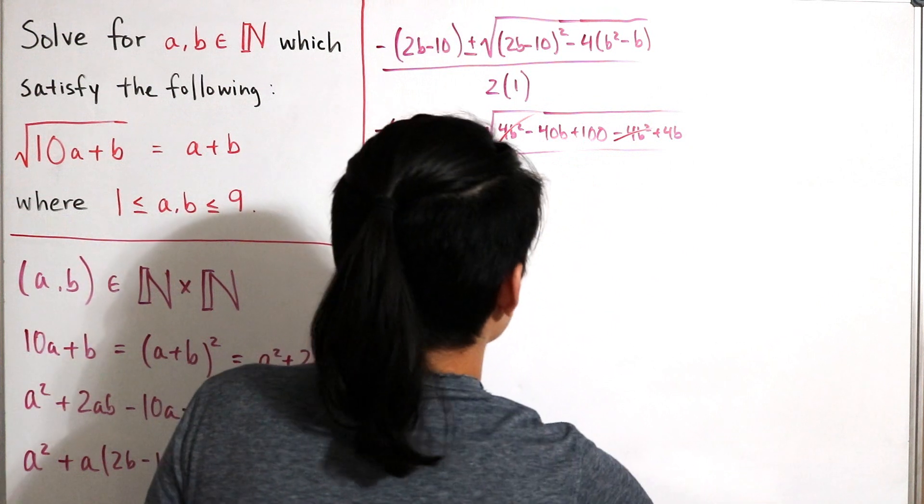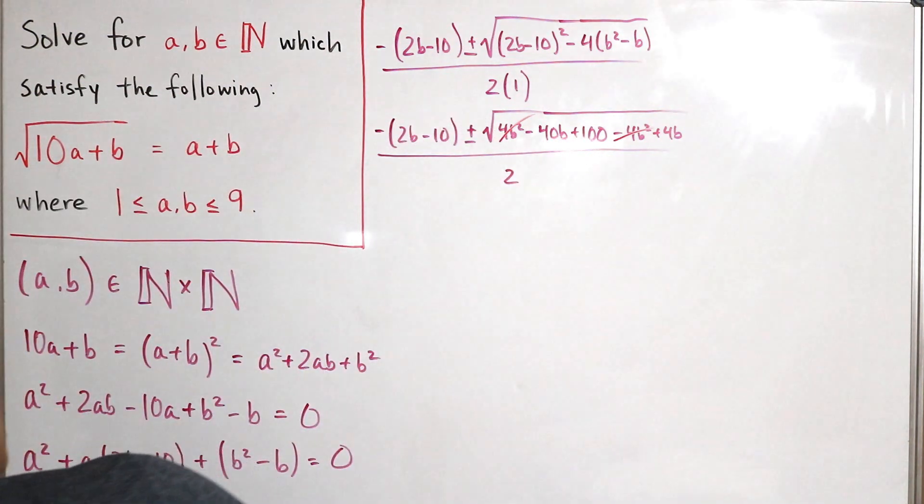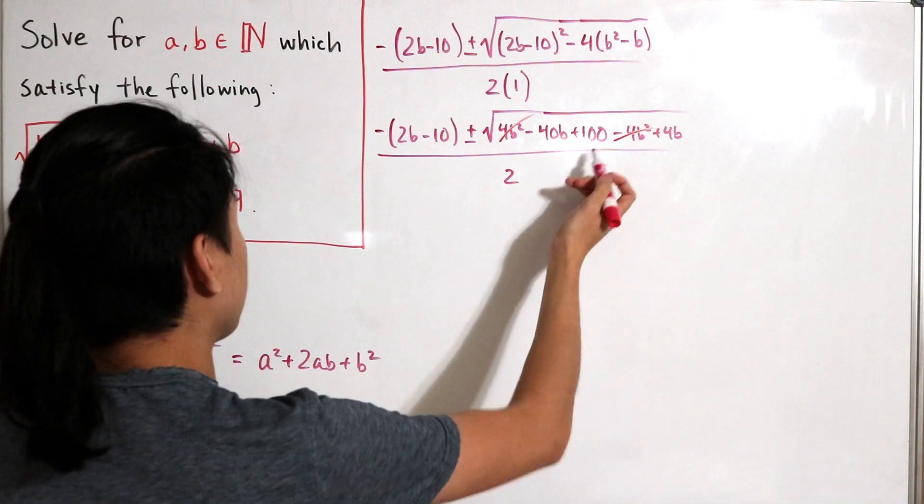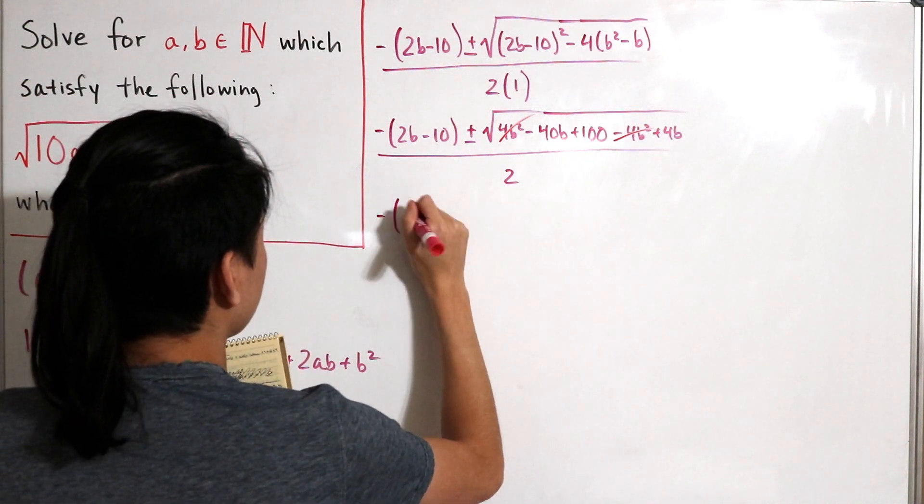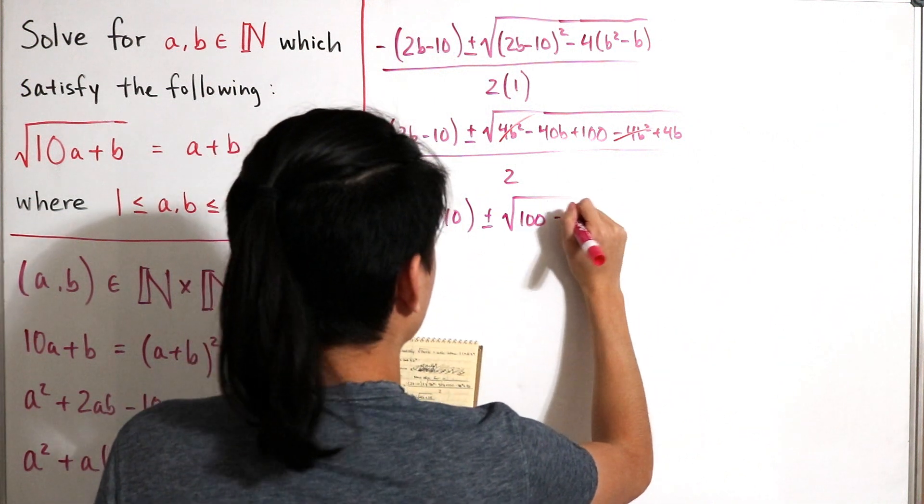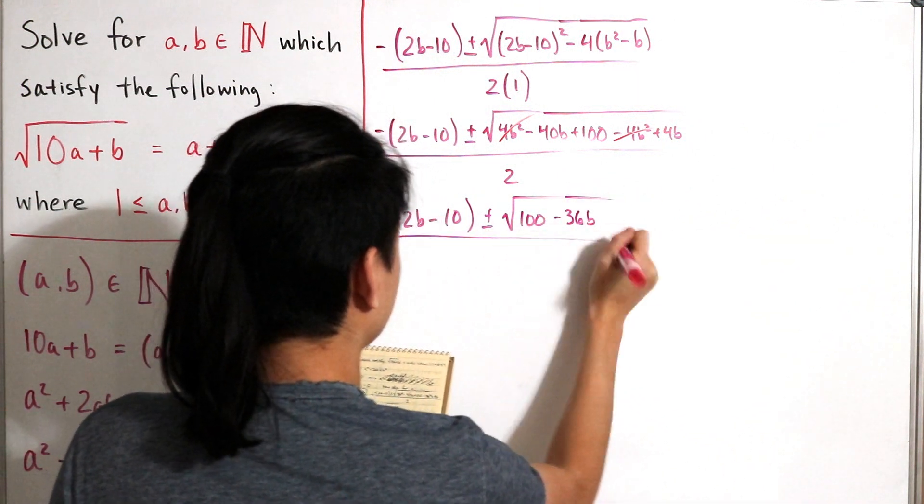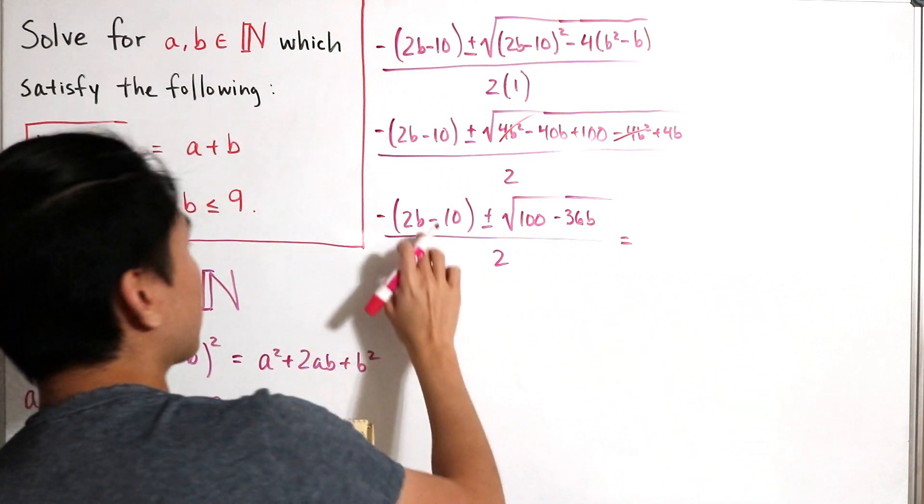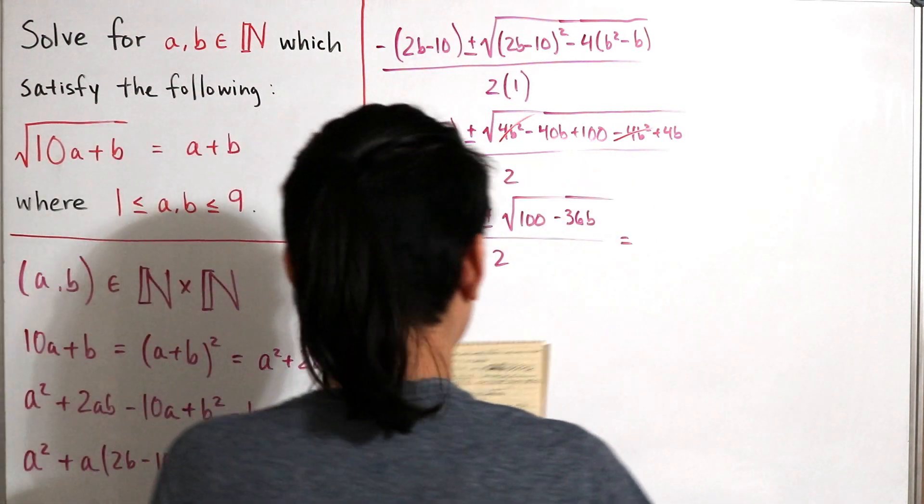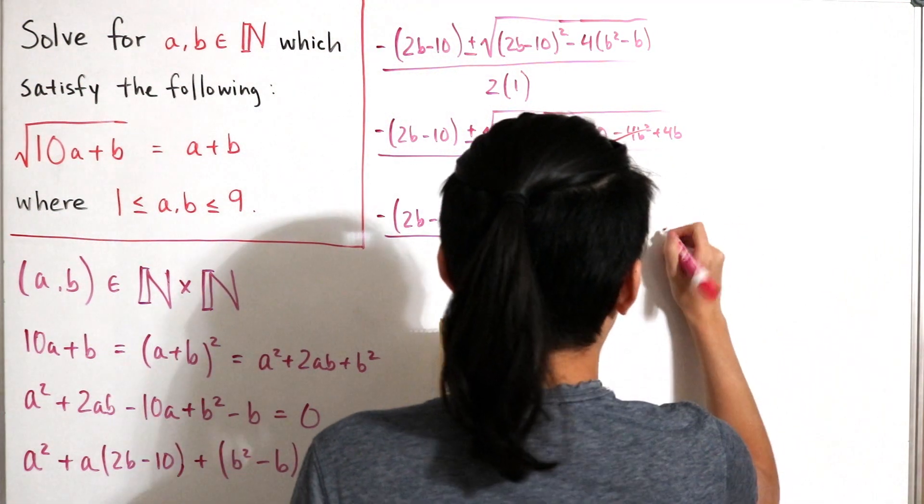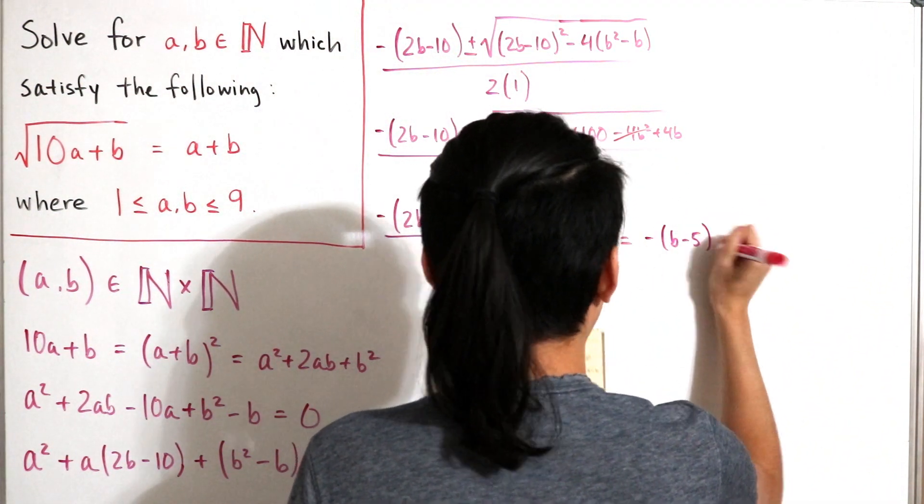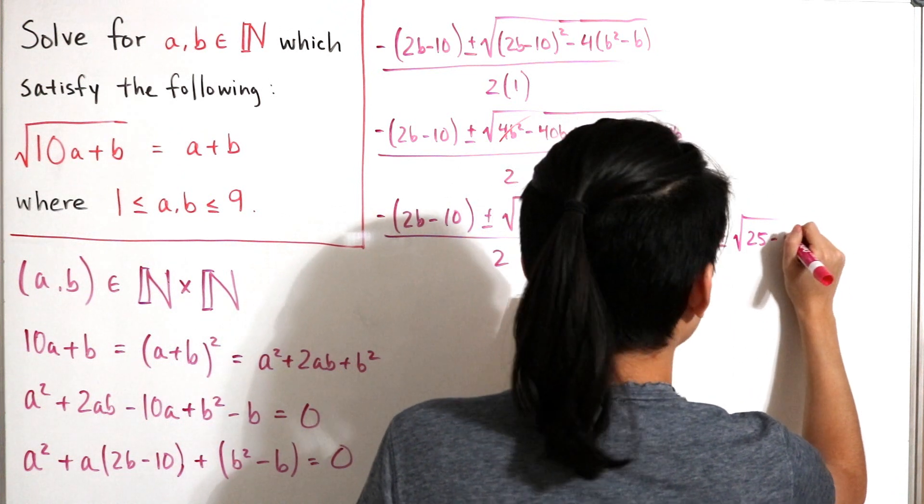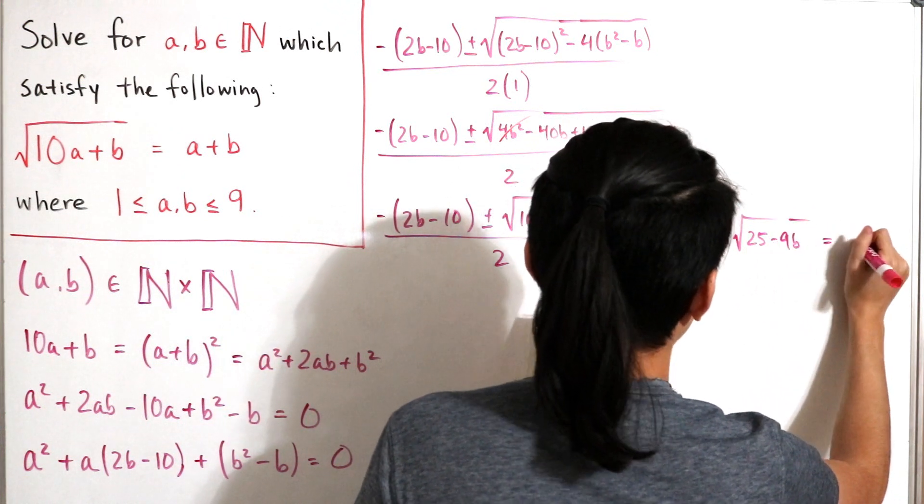Then if we just combine terms, minus 40b plus 4b is -36b. We could rearrange the terms so it feels like we have a positive starting instead of a negative. So it'd be 100, then subtract 36b, divided by 2. Here I can factor out a 4, then take the square root of 4 is 2, but you can also factor out 2 here, and then all the 2s will cancel from both the top and the bottom, so really we would have just negative b minus 5, then plus or minus the square root of 25 minus 9b. And so that is our solution for a.